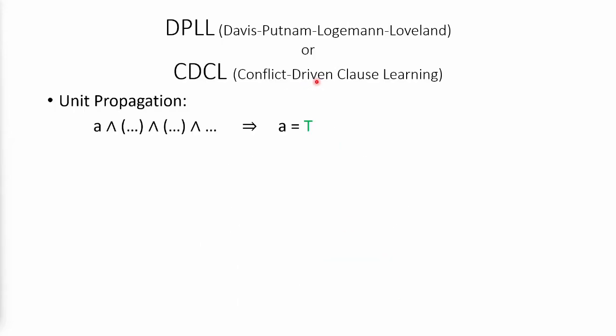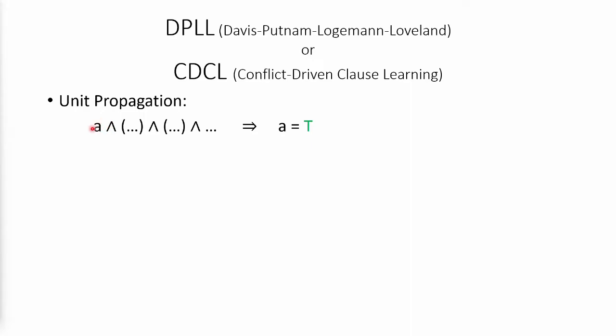Real world algorithms would use more advanced techniques, for example unit propagation, which is when you have one variable and a bunch of other stuff. You can just deduce that it's true instead of guessing it, so you just know the value automatically.